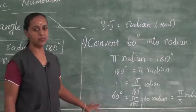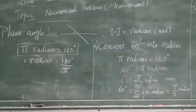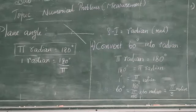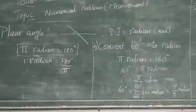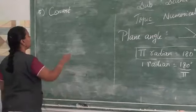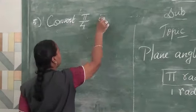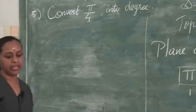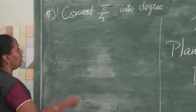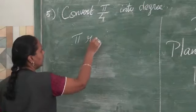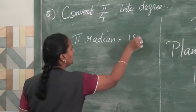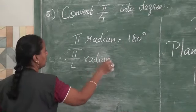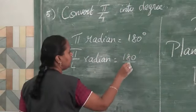The fifth sum: convert π/4 radian into degrees. Using the same formula, π radian = 180 degrees. Therefore, π/4 radian = 180/4. If 1 part equals 180, then 1/4 part equals 180 divided by 4, which gives 45 degrees.